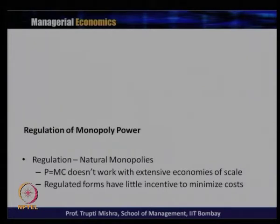We will now see how regulation works in case of a natural monopoly. Natural monopoly is where one firm has generated economies of scale and produces at a lower average cost of production, reducing the scope for other firms to enter and operate. When it comes to regulation of natural monopolies, setting P equal to MC does not work with extensive economies of scale.